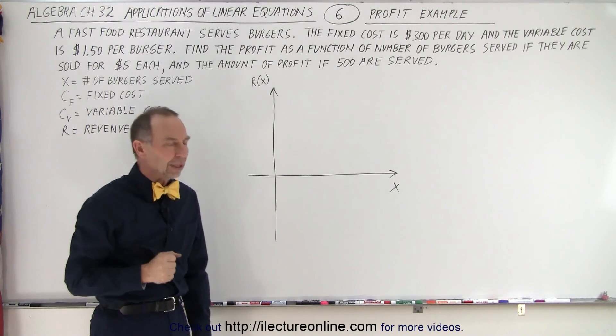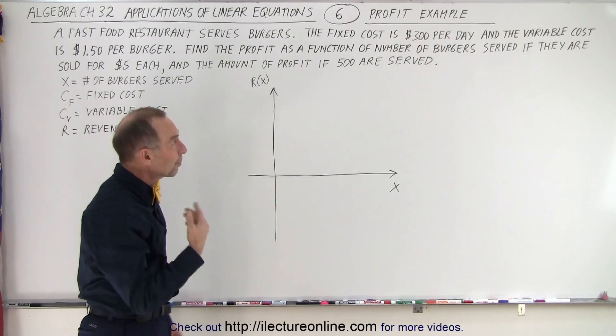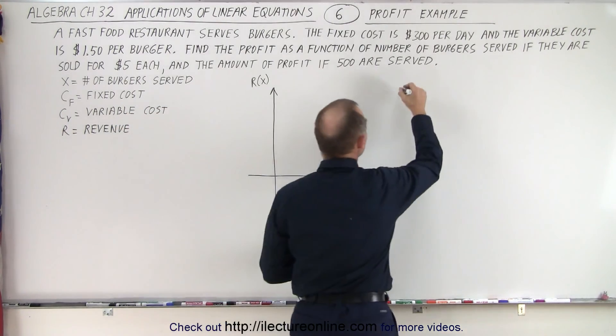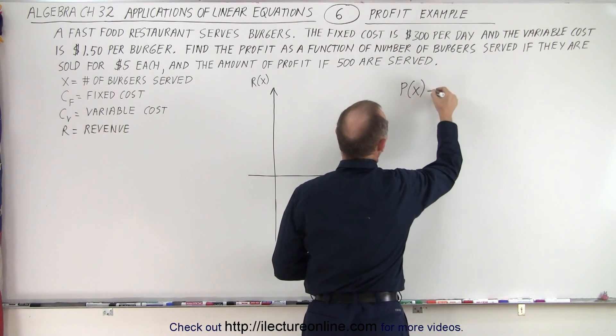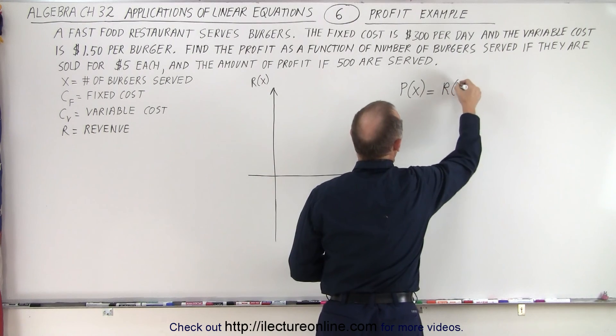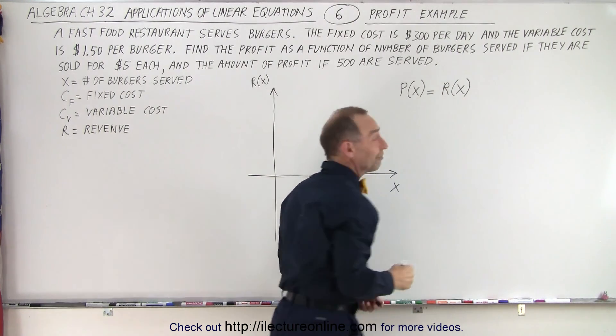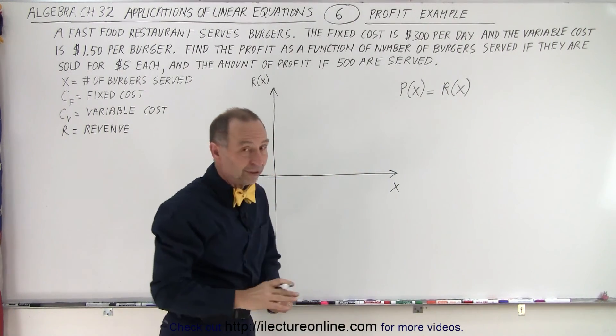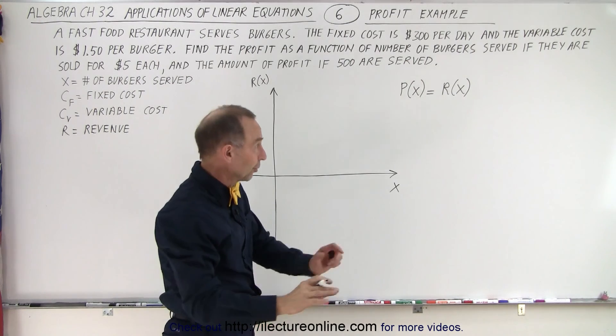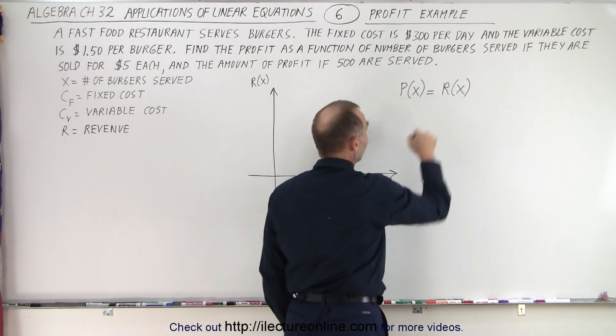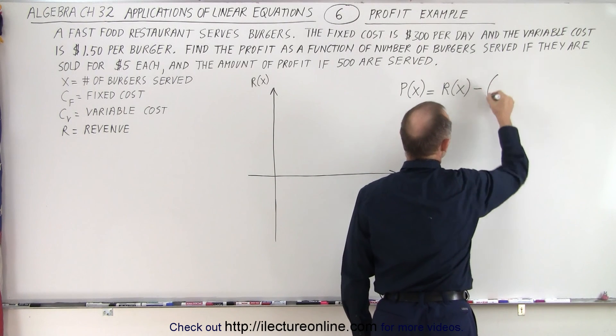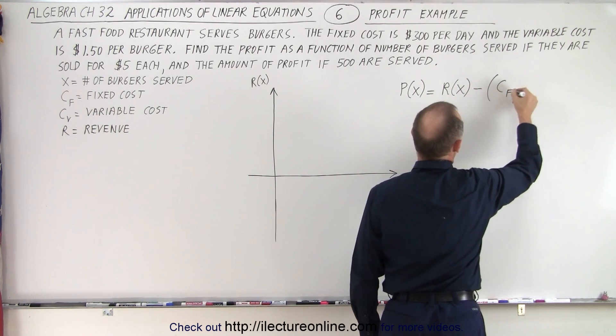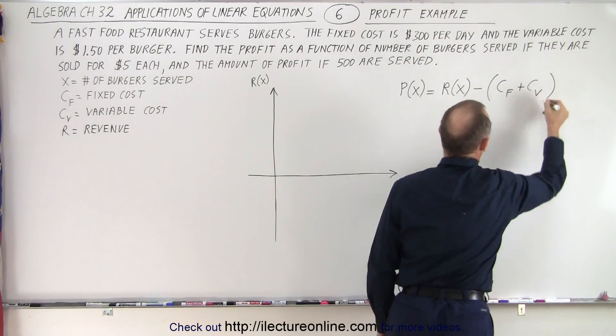So what does that equation look like? Well, we're trying to find the profit. So we'll write P, the profit, as a function of the number of burgers served is going to be equal to the revenue. Again, the revenue is also going to be a function of the number of burgers served. And of course, if there was no cost involved, zero cost, then the profit would equal the revenue. But we need to subtract from that the cost. And the cost is going to be the sum of the fixed cost plus the variable cost.